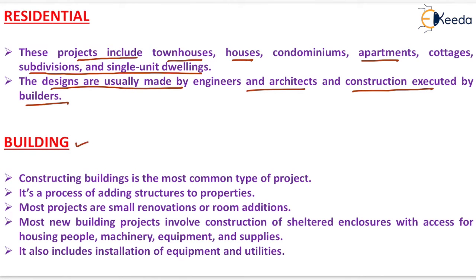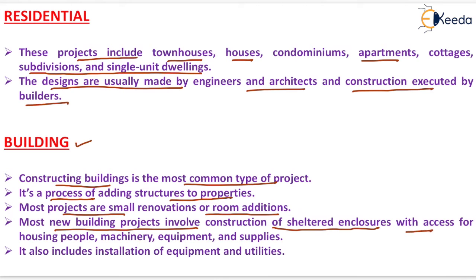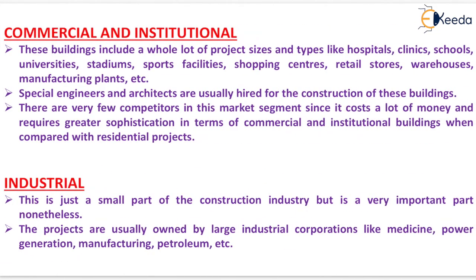The next type of project is the building project. Constructing a building is the most common type of project. It is a process of adding structures to properties. Most projects are small renovations or room addition type projects. Most new building projects involve construction of sheltered enclosures with access for housing people, machinery, equipment, and supplies. It also includes installation of equipment and utilities.